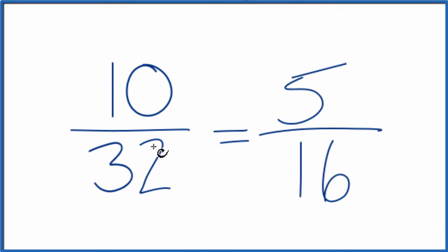And these are equivalent fractions. 10 divided by 32, 5 divided by 16, you'll get the same decimal answer.